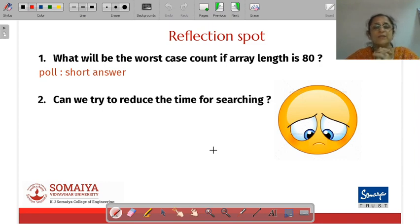One more thing I would like to know from you is what will be the worst case count if the array length is let us say 80. Please write the answer in the short answer in the poll. Yes. Like most of you have said, the array length decides the worst case count because that will be the worst kind of comparisons you have to do. So is this the efficient way of searching? Can we not reduce the time in the searching?